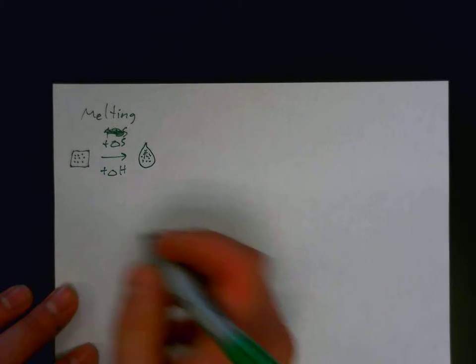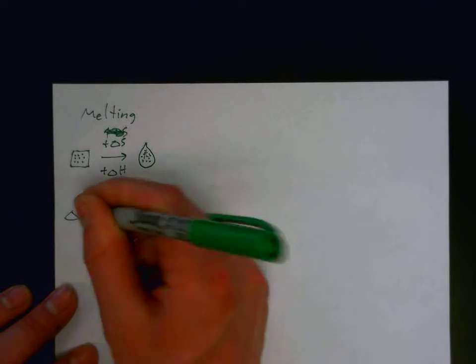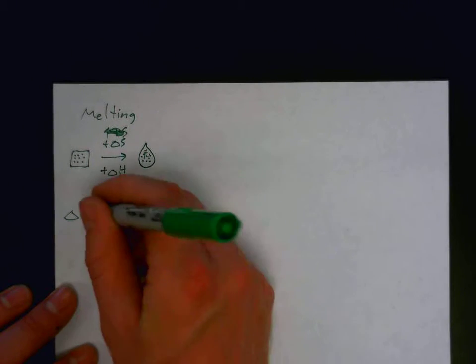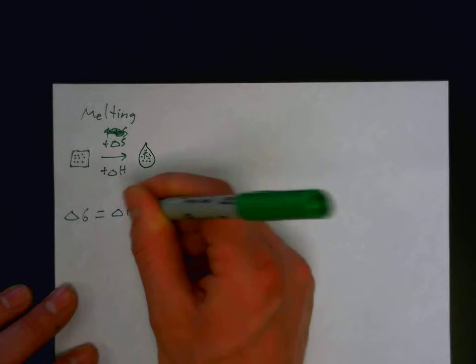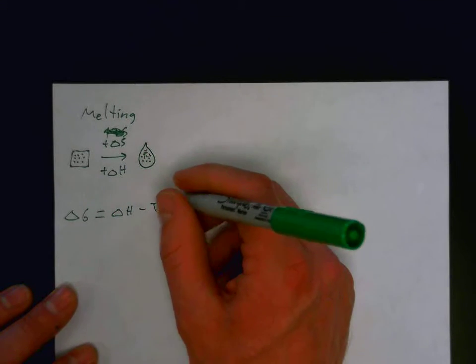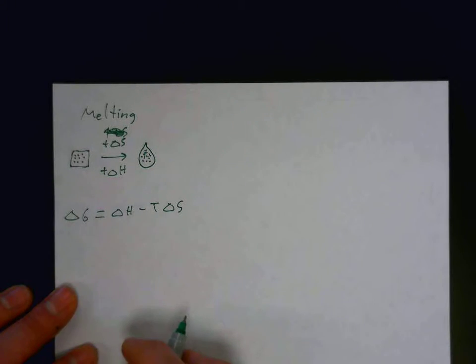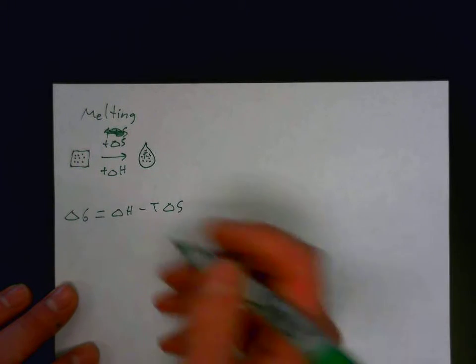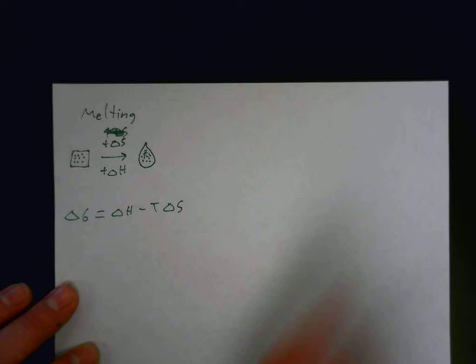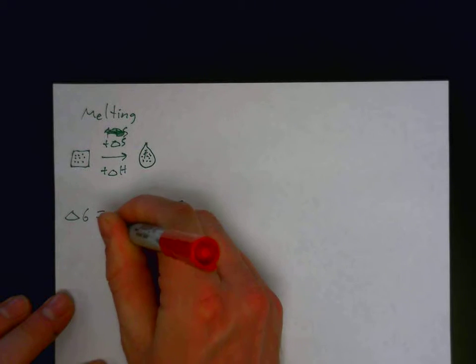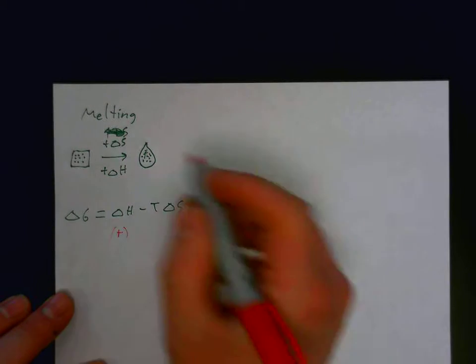So, let's think about the equation. The delta G value is the enthalpy minus the temperature times the change in entropy. So, the change in enthalpy is positive. And the change in entropy is also positive.